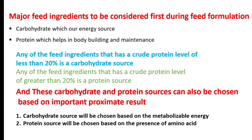Any feed ingredient that has a crude protein level of less than 20% is a carbohydrate source, and any feed ingredient that has a crude protein level of greater than 20% is a protein source. That is how we categorize these two major ingredients. Carbohydrate sources are chosen based on metabolizable energy, while protein sources are chosen based on the presence of amino acids that aid in the fast growth of the fish.